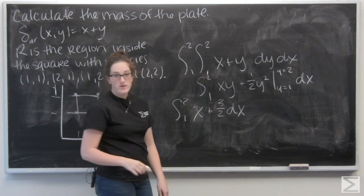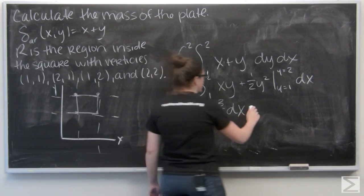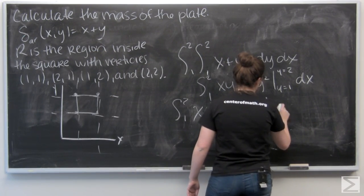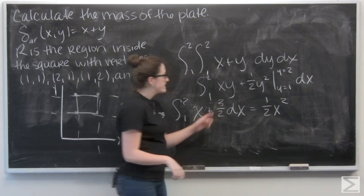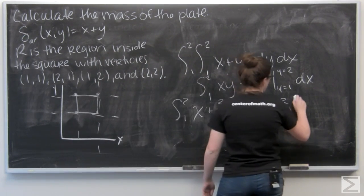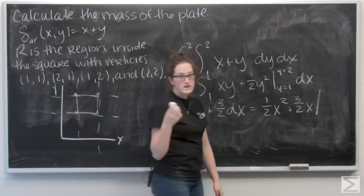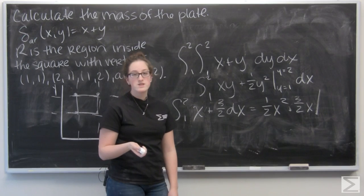Now let's go ahead and integrate with respect to x. Integral of x is going to be one-half x squared, and the integral of three-halves is going to be three-halves x. And then I want to evaluate that from x equals 1 to x equals 2.